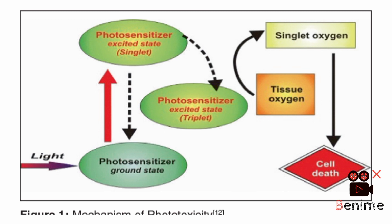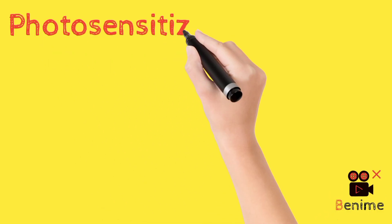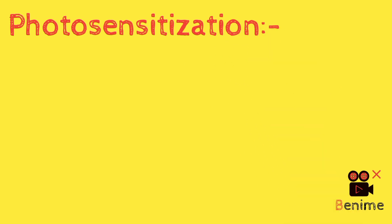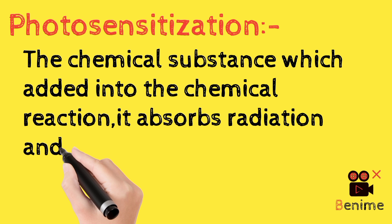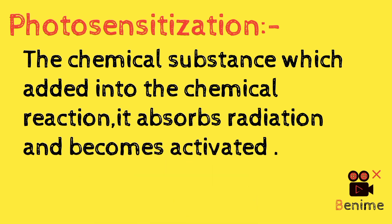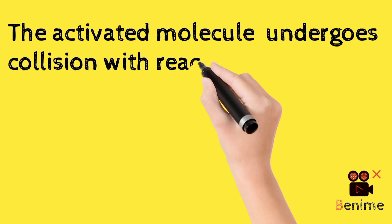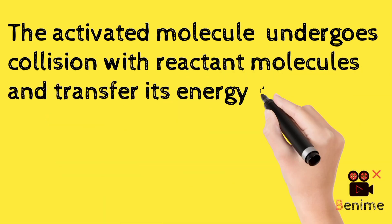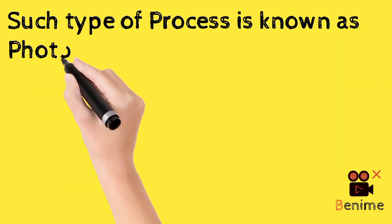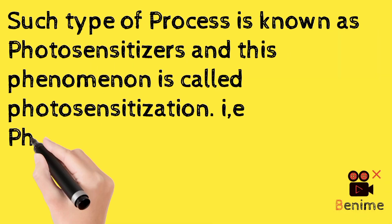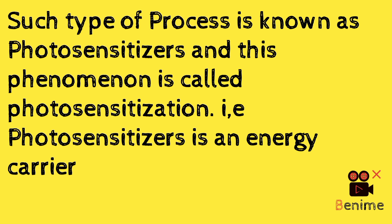A Photosensitizer is a chemical substance which is added to a chemical reaction. It absorbs radiation and becomes activated. The activated molecule then undergoes collision with the reactant molecule, transfers its energy to the reactant molecule, and becomes unactivated. This type of process is known as photosensitization.